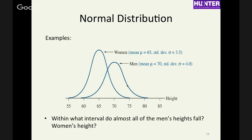Here's a question: within what interval do almost all men's heights fall? Between about 60 and 80 — that's almost three standard deviations above and below the mean of 70. For women it's between about 55 and 75, again about three standard deviations. That's part of the empirical rule I'm going to show you.